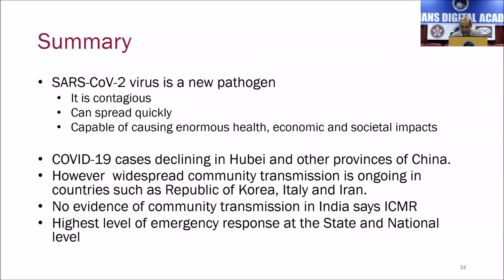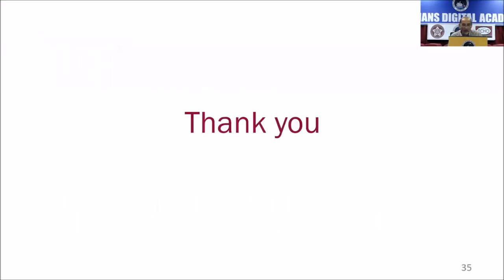Summary: SARS-CoV-2 is a new pathogen. It is contagious, can spread quickly, and is capable of causing enormous health problems. Having said that, 80% of COVID-19 infection patients have a self-limiting illness and they recover. There is no medicine or drug that kills the SARS virus, and many treatments are under evaluation — final word from randomized clinical trials will be out in the first week of April. China has been able to control it — that is the good news. It is possible to control and bring down infections. We have a great opportunity in India and should take it very seriously. The highest level of emergency response is required. Thank you.